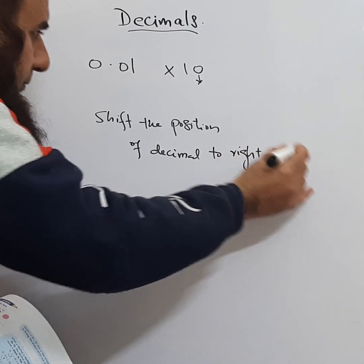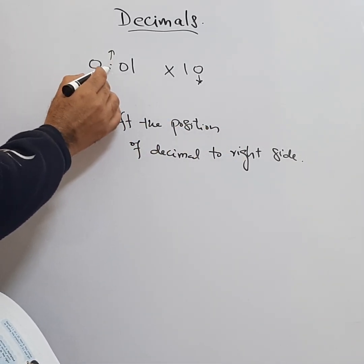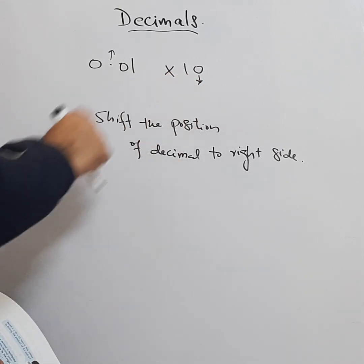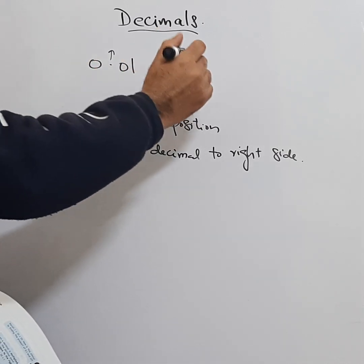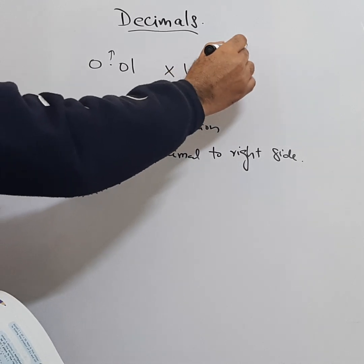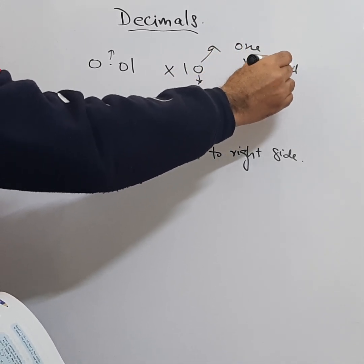Here we can see the decimal. This is the position. When we multiply by 10, we need to move this decimal to the right side by one position. One zero means one movement.